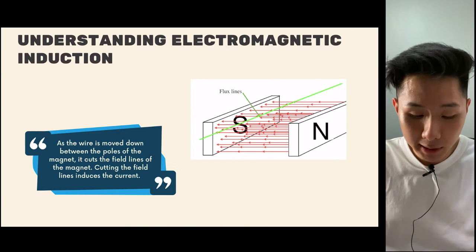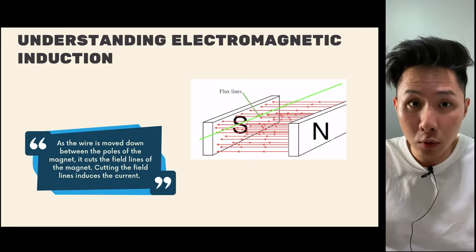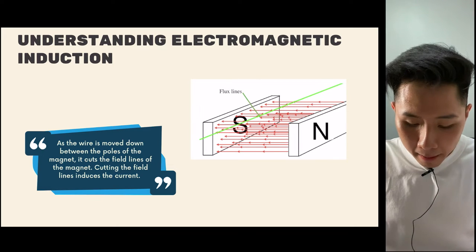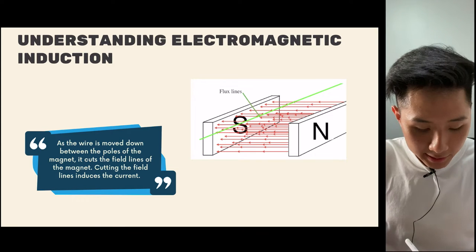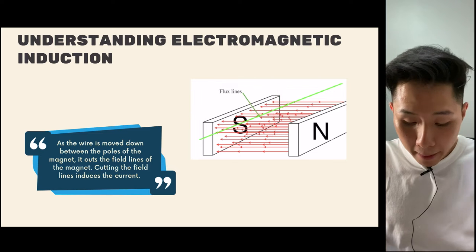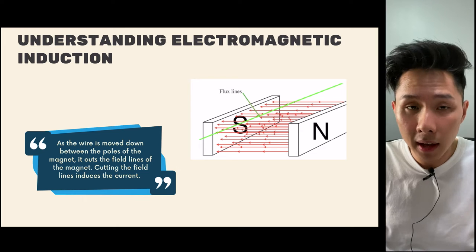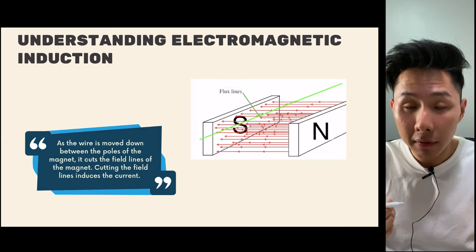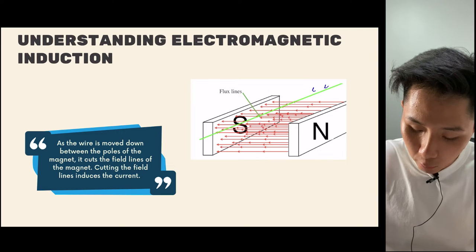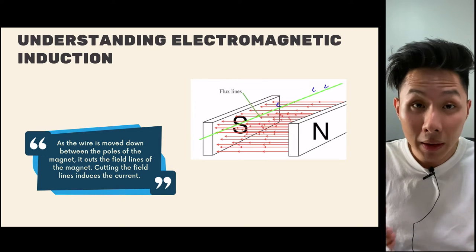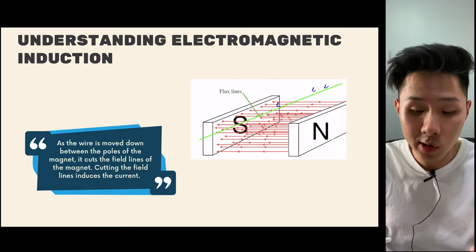Why does movement plus magnet create electricity, and why does it have to be a coil of wire and not plastic? As the wire is moved down the pole, it cuts through the magnetic field lines generated by the magnets. When the magnetic field line is cut, it triggers some of the electrons within the wire to move. When the electrons move, there is a current. That's the general idea of how electricity is generated.